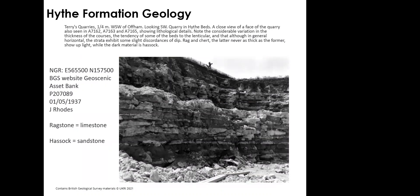Finding representative sections of the Hythe Formation is quite difficult — much like other areas in the UK away from the coast, sections have been covered over or infilled, and quarrying is not as active as it used to be. The BGS website's GeoScenic photo bank is useful for finding historical photographs of former working quarries. In these images, the ragstone or limestone appears in lighter grey shades, while the hassock or sandstone is in darker shades — reasonably regularly bedded, though individual bed thickness varies and the beds are somewhat lenticular.